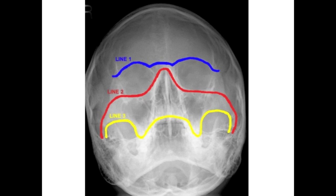These are Brown's lines, which emphasise that the best way to read an OM view is to compare one side with the other. When you read an OM view, start from the top and work your way down. The blue line demarcates the superior orbital rim and the ZF suture — trace this with your finger or a pen. The red line indicates the nasal bones, inferior orbital rim and zygomatic arch. The yellow line highlights the maxilla, buttress and zygomatic arch. For each line, compare left and right and look for bony steps and asymmetry. Be mindful that the radiographer might not always be able to position the patient ideally, especially if they are inebriated.